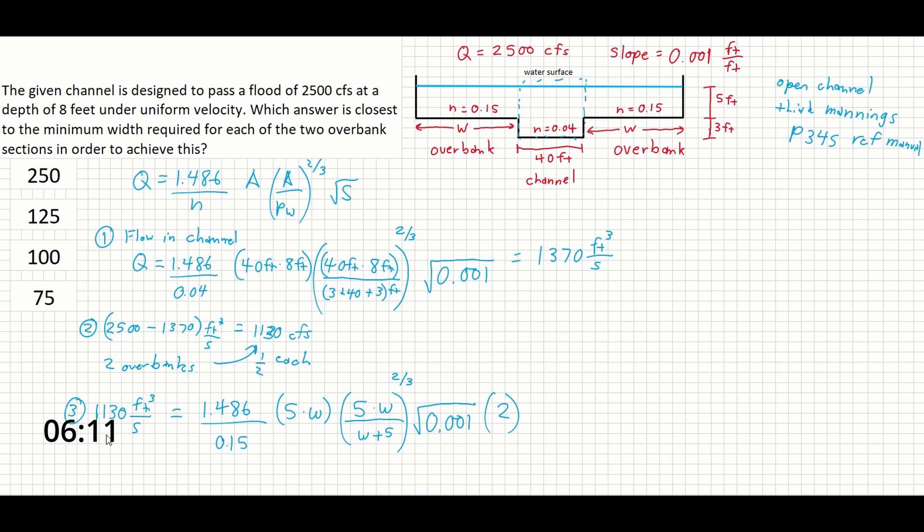So this is where we get to a point in the problem where we can simplify a little bit, but it's going to be really difficult and time-consuming to try to solve for W by itself. And with the calculator you have on the exam, it might not even really be possible to do that without a lot of additional steps. So at this point, it makes more sense to, we can simplify it a little bit. So let's remove any of these free terms here that aren't impacted by the W variable. So if we go to step 4 over here, we can say that if we multiply by 0.15, divide by 1.486, divide by the slope, and divide by 2.